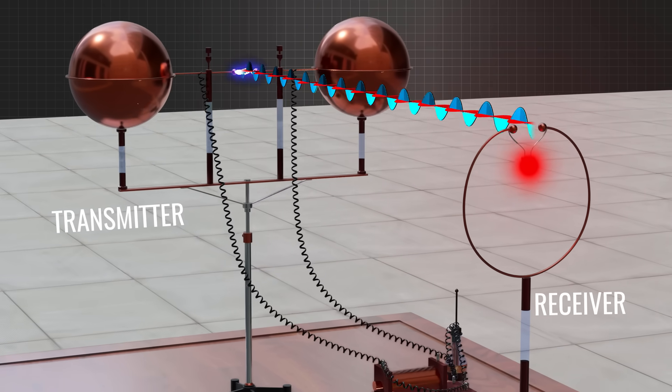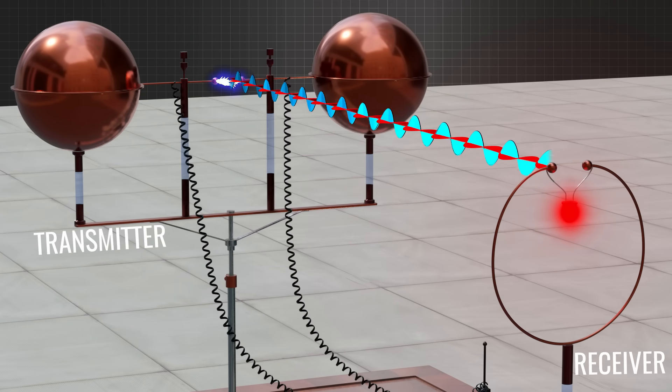If you had placed an LED in that gap, the bulb would have glowed. This was a clear case of electromagnetic wave propagation and detection.